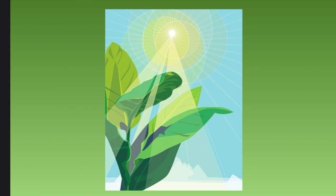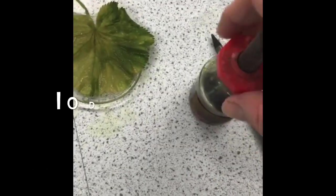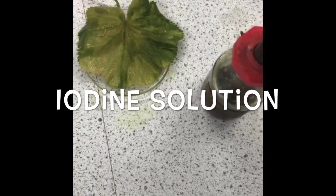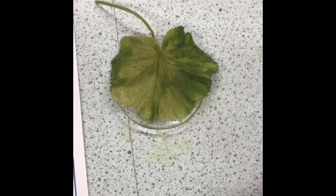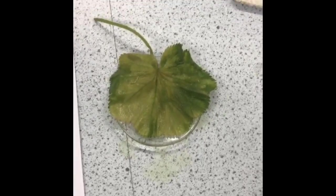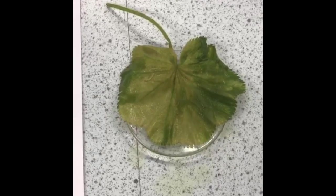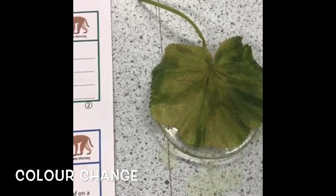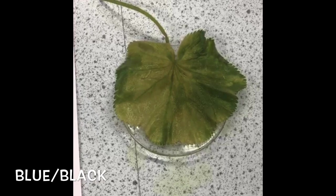We're first going to show you the results for the leaf that did have light — the leaf that was in light for 24 hours beforehand. I'm laying my leaf out on a petri dish and getting my iodine. I need to be very careful with iodine because it will stain my fingers. I've spread the leaf out nice and flat and I don't want to put too much iodine on because the colour will mask any effect, but too little and I won't see the colour change. I'm looking for either brown if there's no starch, or blue-black if there is starch.